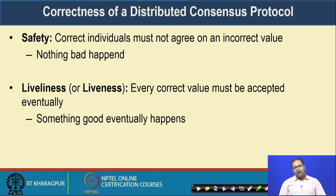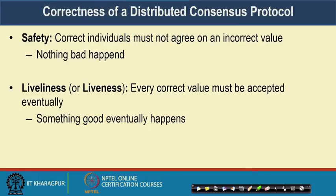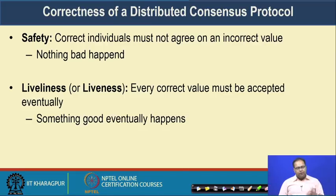The correctness of a distributed consensus algorithm can be characterized by two properties: safety and liveness. The safety property says that the correct individual must not agree on an incorrect value — that means nothing bad has happened in the system. The safety property ensures that correct individuals in the network will never converge to an incorrect value. The liveness property states that every correct value must be accepted eventually — something good will eventually happen. If you are proposing some good values, that good value will be committed eventually, although there can be some time lag or delay in reaching consensus. But after the consensus protocol terminates, you are expected to get a consensus value. These are the two correctness properties for distributed consensus that we need to ensure whenever we design a distributed consensus algorithm.